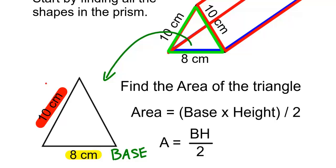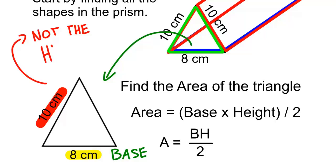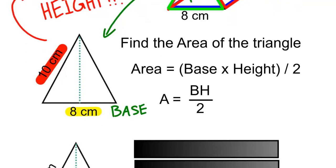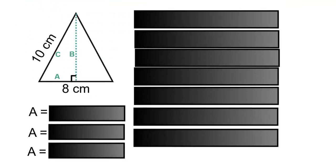A lot of people think the 10 centimeters will be the height — and this is where the most common mistake is made. The 10 centimeters is not the height of the triangle. The height of a triangle is the distance perpendicular from the base to the top point of the triangle, represented by a green dotted line. The height has to be 90 degrees from the base.